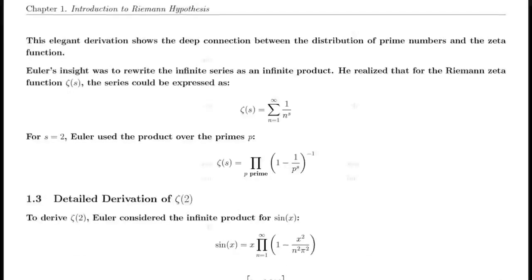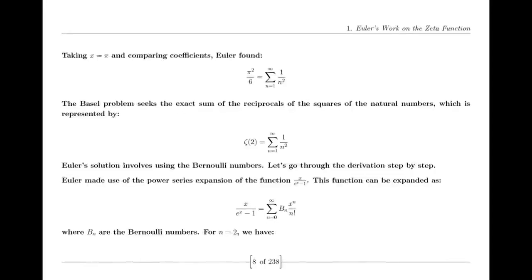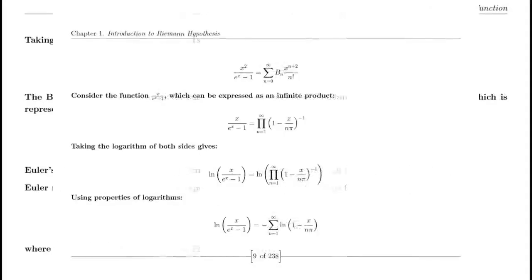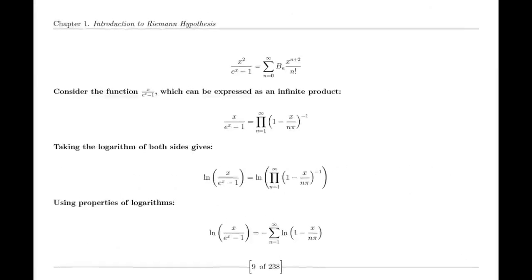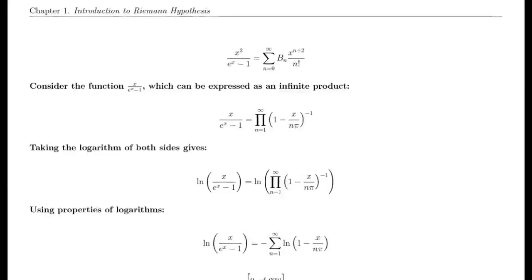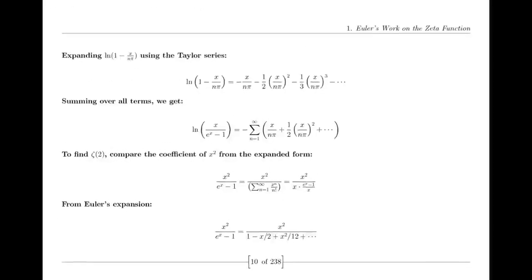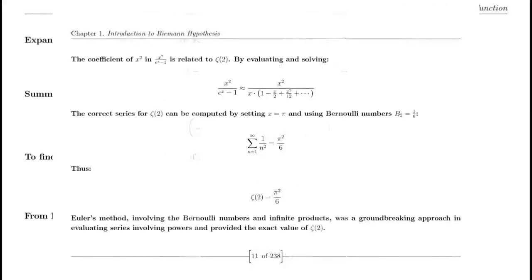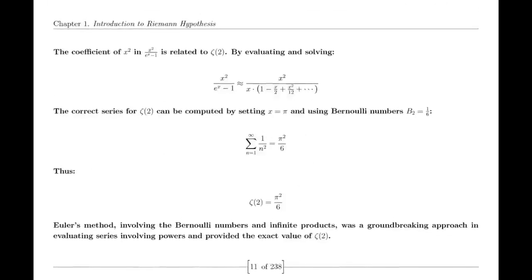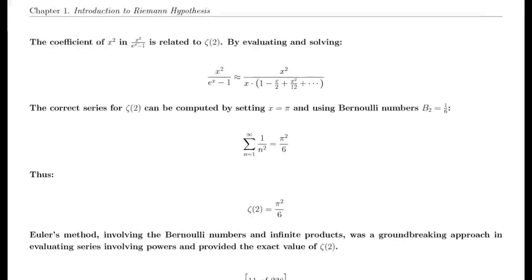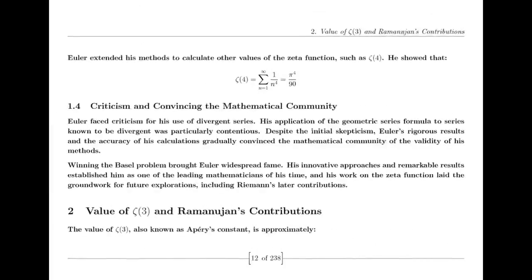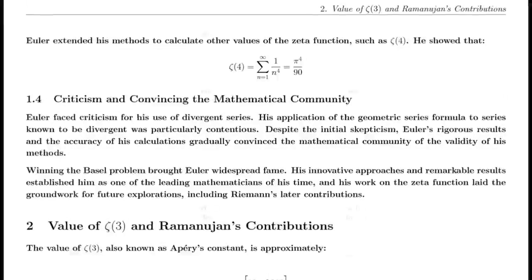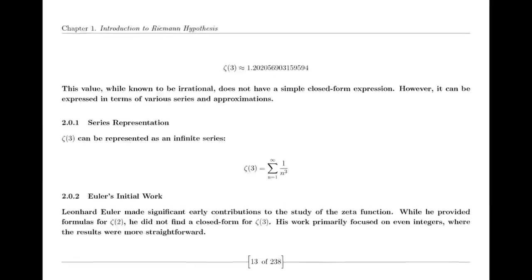In 1859, Riemann published his seminal paper on the distribution of prime numbers, introducing the zeta function and laying the groundwork for modern analytic number theory. This paper was a milestone in mathematical history. The Riemann hypothesis proposes that all non-trivial zeros of the zeta function lie on the critical line where the real part of s is one-half. Despite extensive numerical evidence supporting the hypothesis, a formal proof or disproof remains one of the greatest challenges in mathematics.